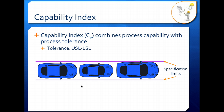The capability index, or C sub P, combines our process capability with the process tolerance. The tolerance is the upper specification limit minus the lower specification limit. This gives us a better idea of whether we are in specification or not. The car on the left and in the center are clearly within specification, with the center car able to shift slightly one way or the other and still meet spec. However, the car on the right has a mirror hanging out over the specification limit, so the capability index would tell us our process is out of specification.